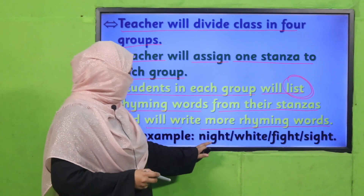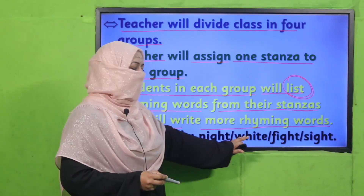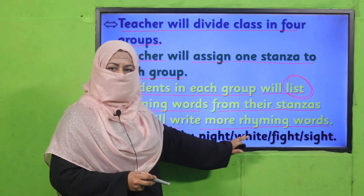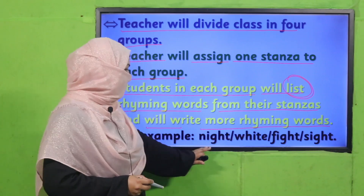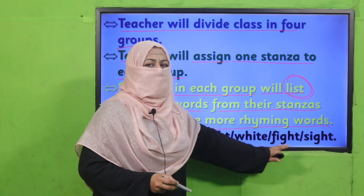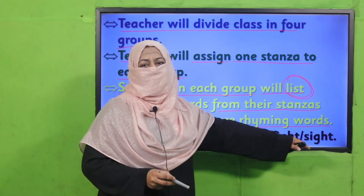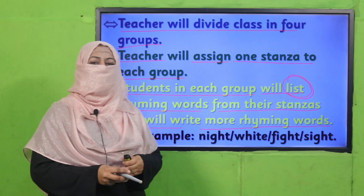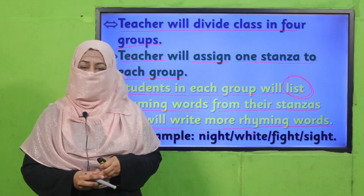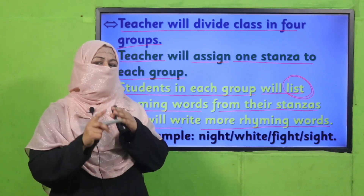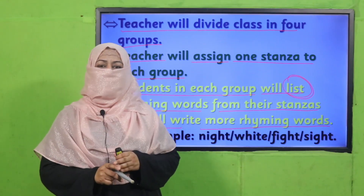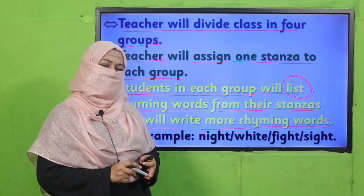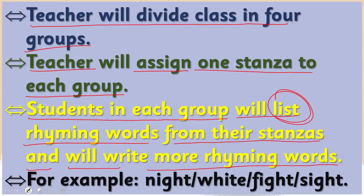For example: 'night,' 'white' — these are already in your book — and then you will add 'fight,' 'sight,' 'bite,' etc. This is how you will make a list of rhyming words. Let's see who does it nicely! Pause the video, complete this activity, and then come back.